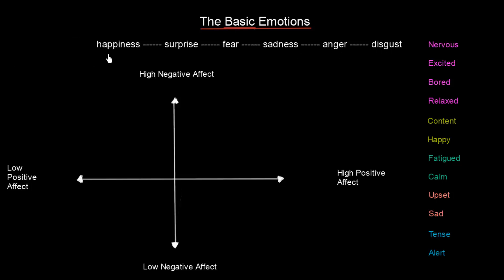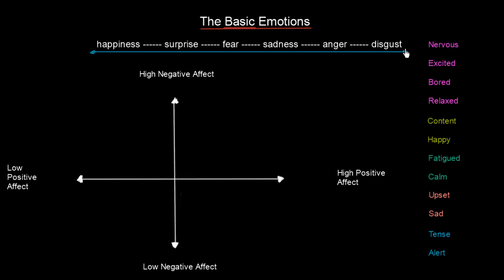They have placed these emotions on a continuum from left to right. When you are happy, you are on the left end, the most positive side. On the other hand, when you feel disgust, you are on the right end, the negative side. So you see how it flows — you can be happy, then surprised, then have some fear, then become sad, angry, or even disgusted.